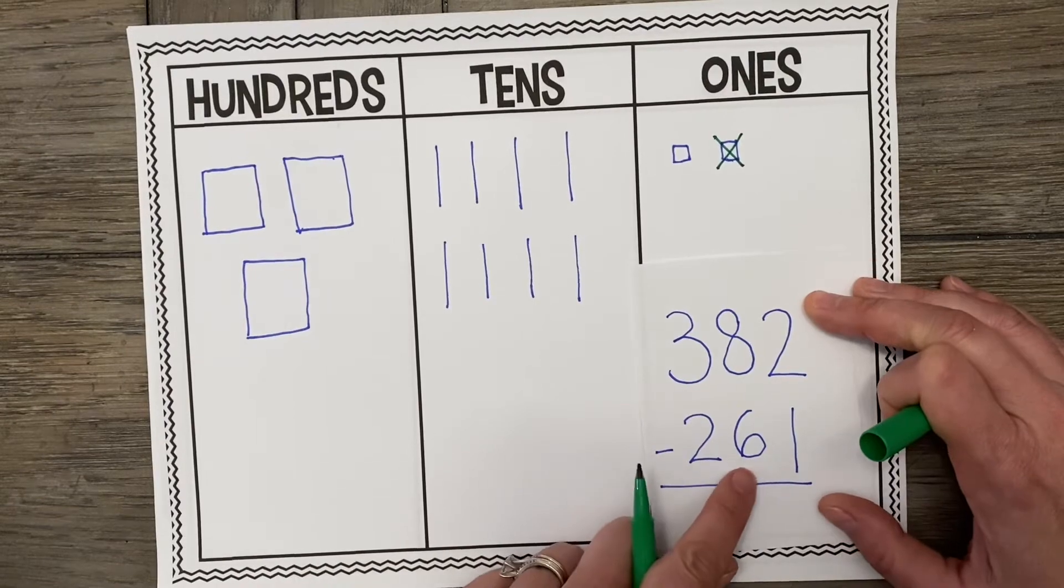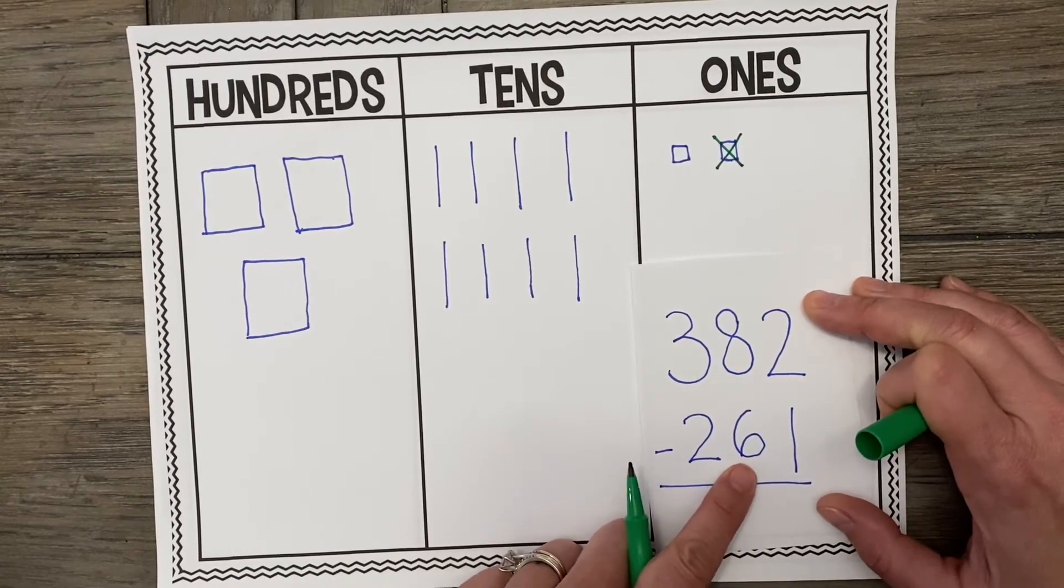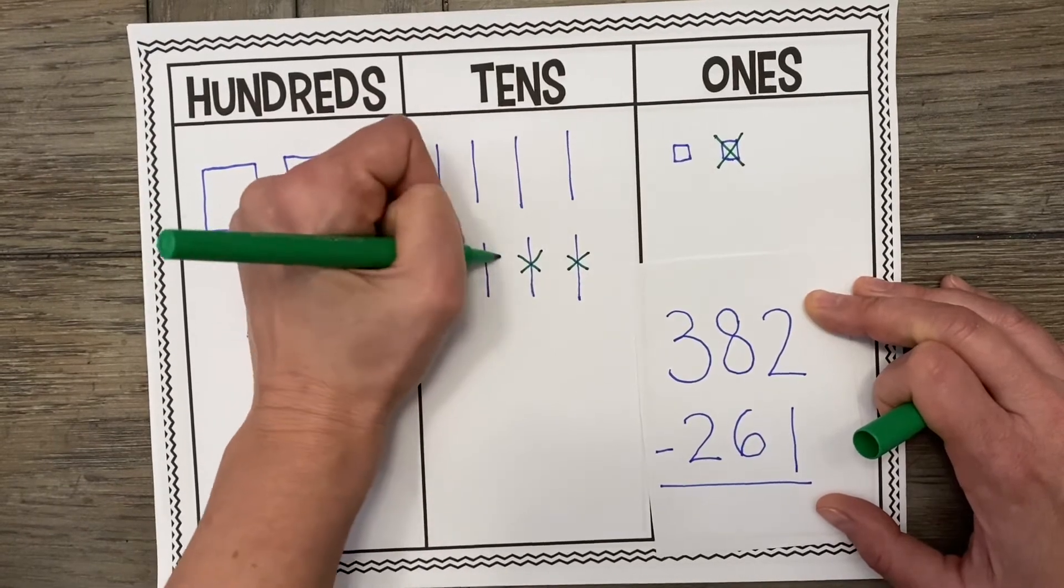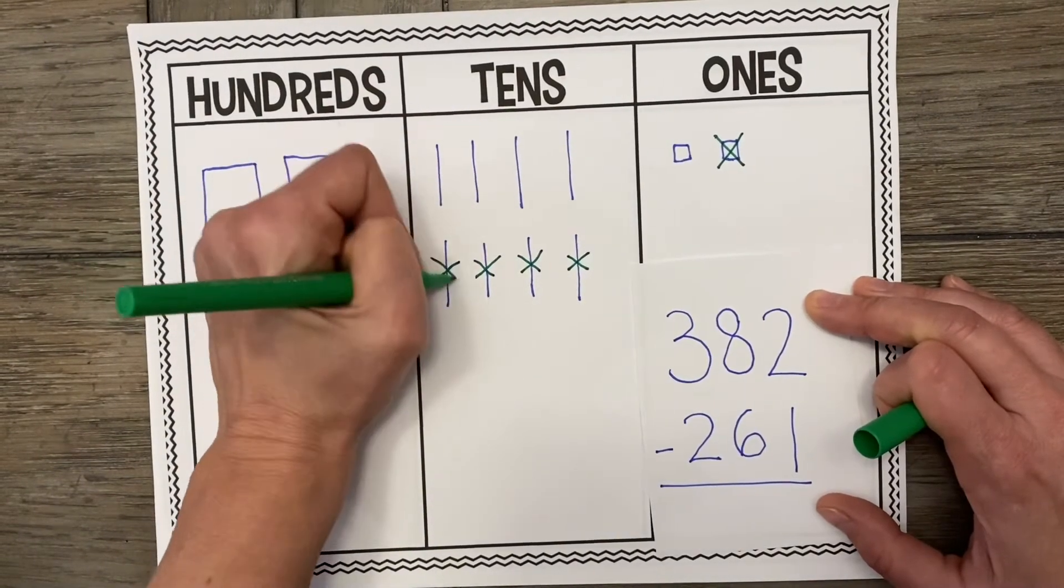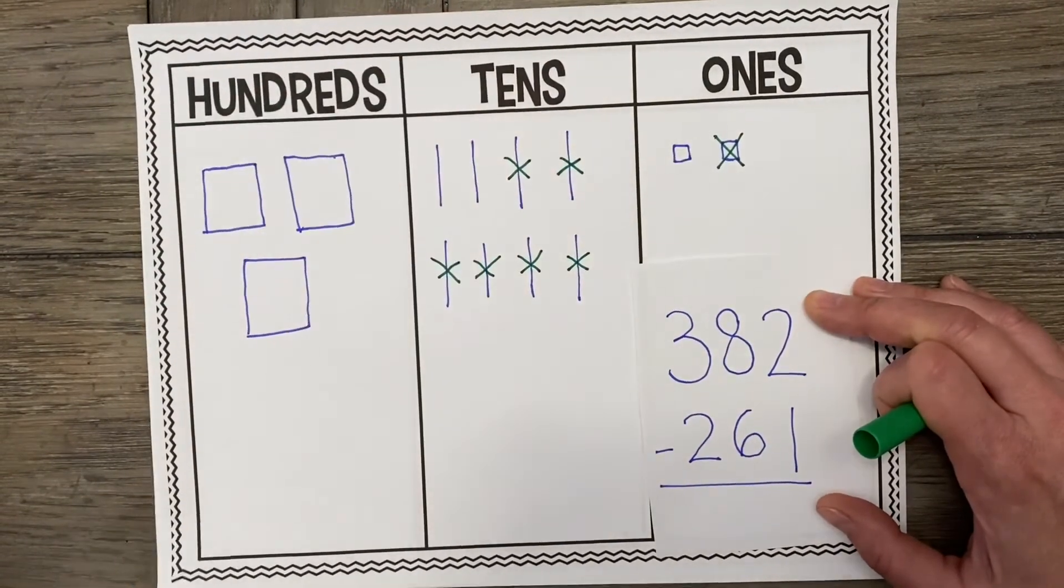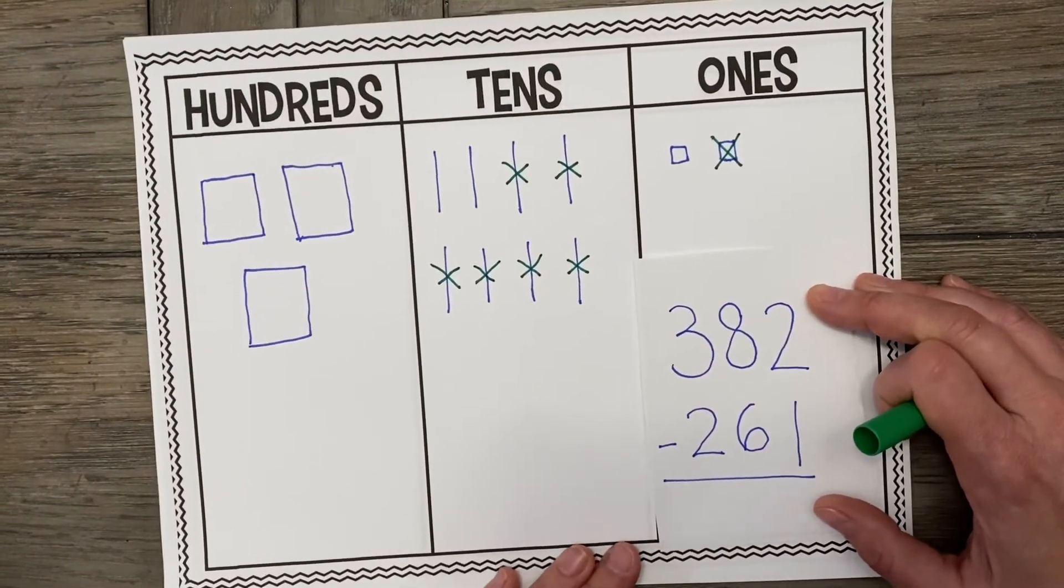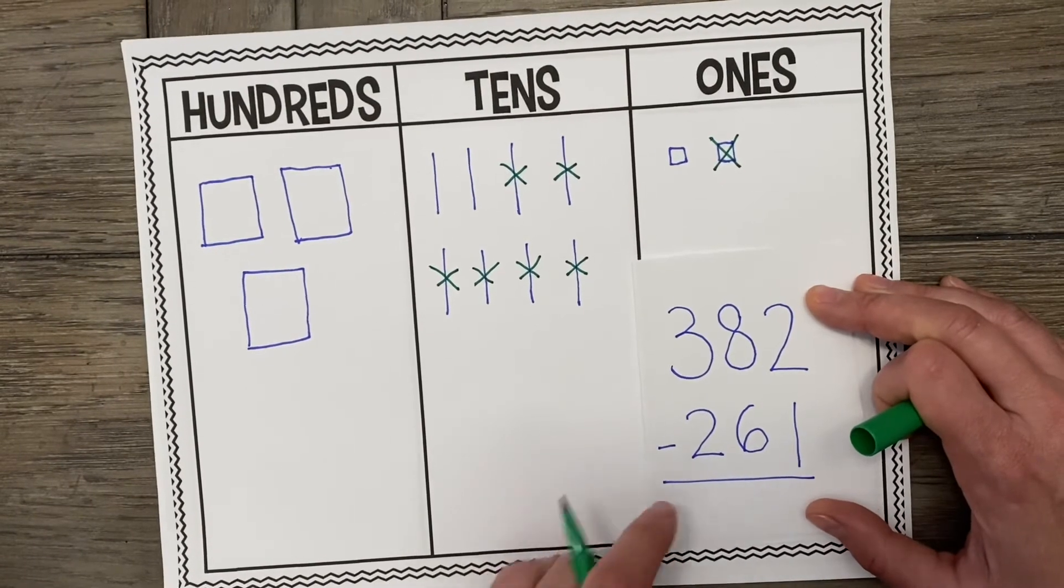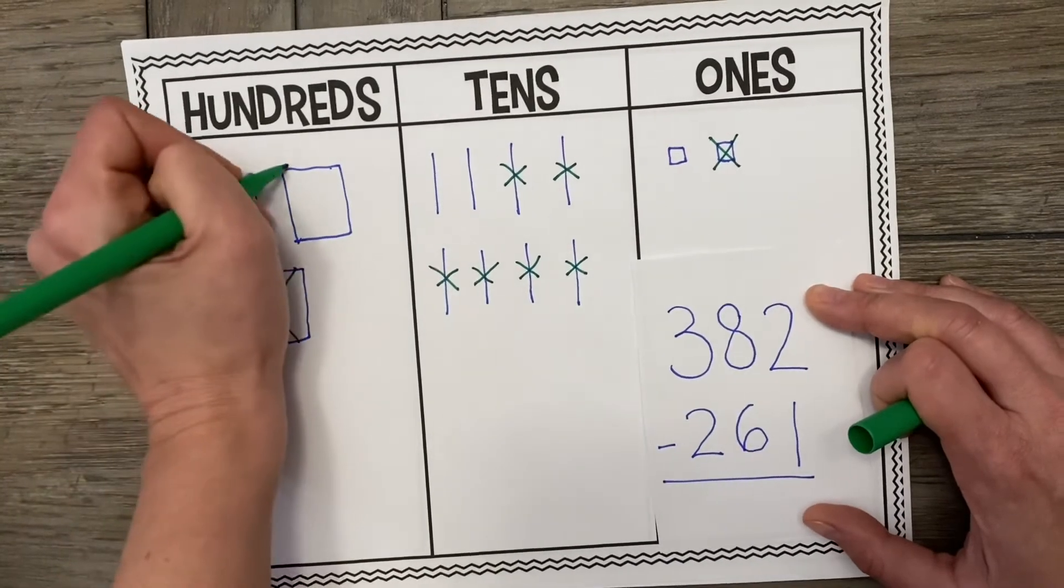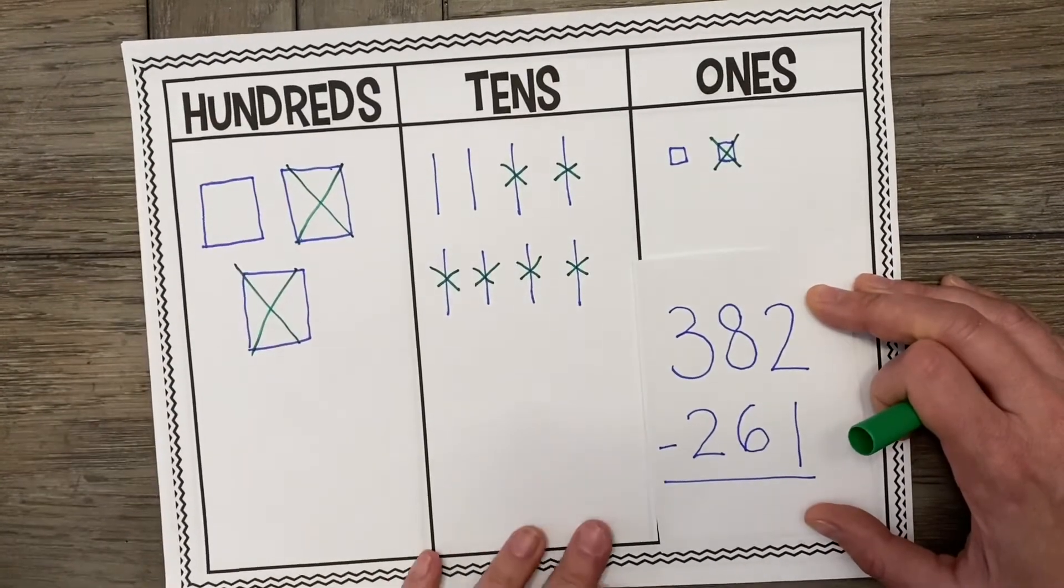Now let's move over to our 10s. How many 10s are we taking away? That's right, we're taking away 6 tens. Let's go ahead and do that now. 1, 2, 3, 4, 5, and 6. Excellent. And how many 100s are we taking away? That's right, we're taking away 2 of our 100s.